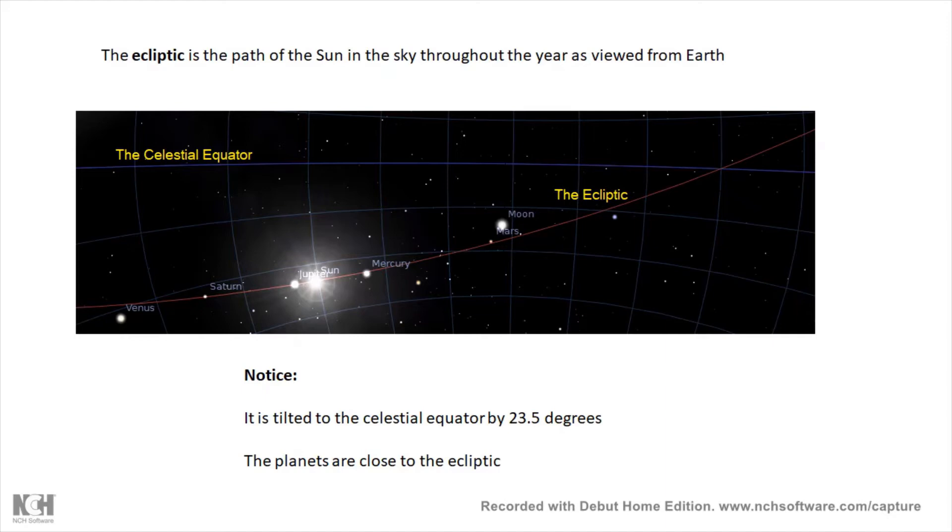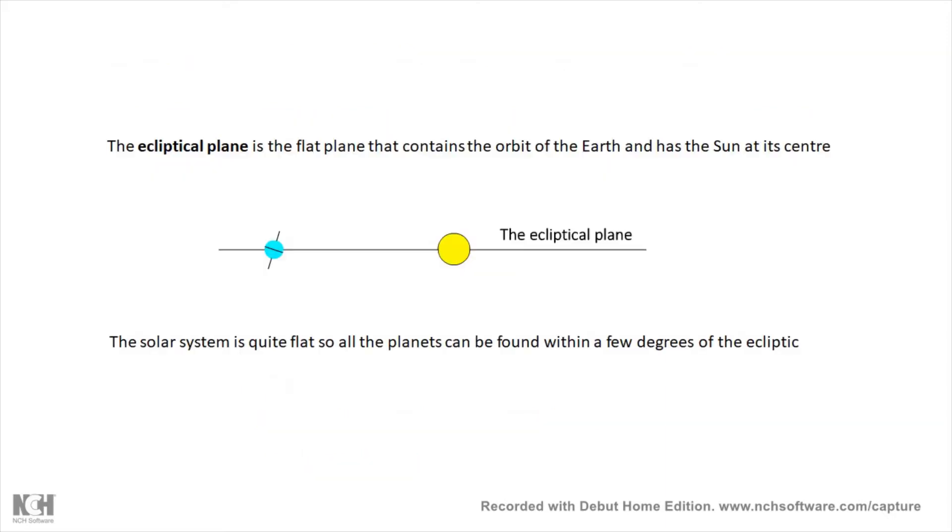Notice on here at this time there's quite a few planets which are quite close to the Sun, it's a bit of a conjunction going on. The planets will stay pretty close to the ecliptic.